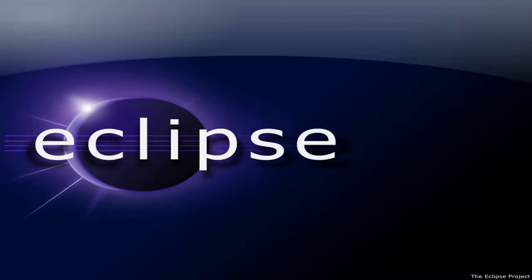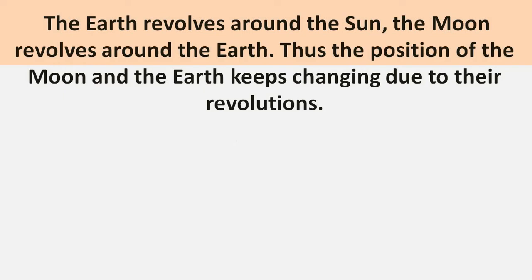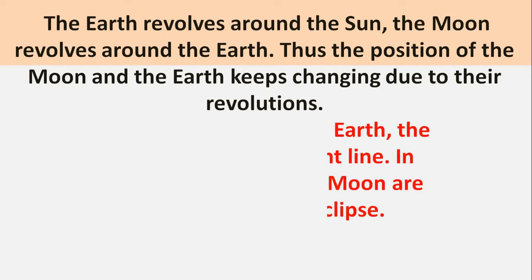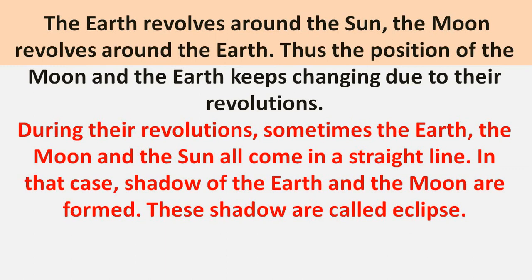Children, our next topic is Eclipse, which is also called in Hindi 'Grahan'. As you learned, the Earth revolves around the sun, and similarly the moon revolves around the Earth. Due to this revolution, the moon and Earth keep changing their positions. Sometimes the sun, the moon, and the Earth all come in a straight line, and in that case, shadows of the Earth and the moon are formed. These shadows are called Eclipse.